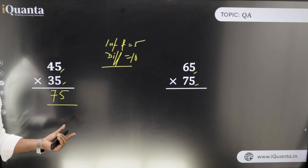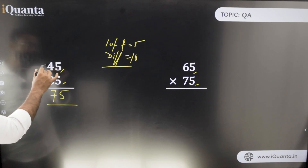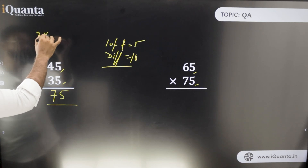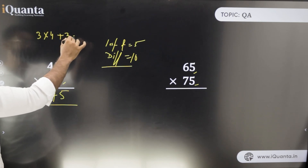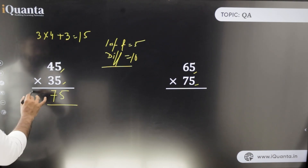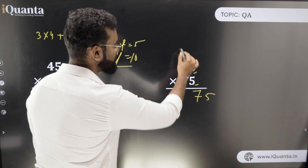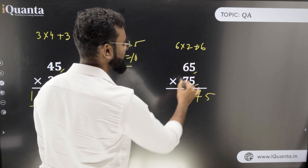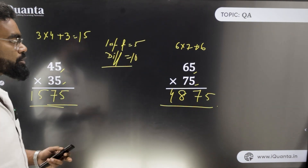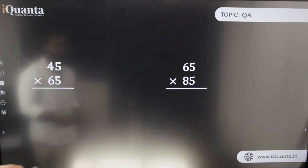For the difference-of-10 case, the last two digits are fixed as 75. The leading part is: smaller number's tens digit × larger number's tens digit + smaller tens digit. For 35 × 45: 3 × 4 + 3 = 15, giving 1575. For 65 × 75: 6 × 7 + 6 = 48, giving 4875.